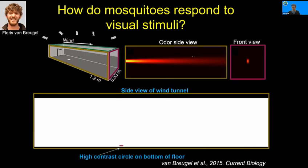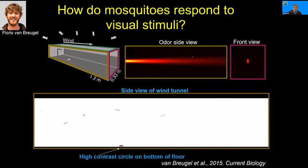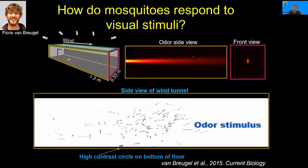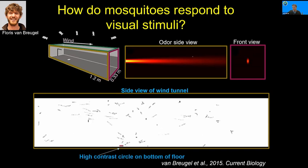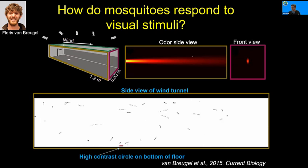This is work by Flores Van Bruegel, a former postdoc in the lab. We looked at the behavior of mosquitoes within the wind tunnel using a multi-camera real-time tracking system. Flores put a visual object on the floor of the tunnel and at a certain time point released CO2. When CO2 was released, all of a sudden the mosquitoes became very attracted to the visual target — they were not attracted to it beforehand. When the CO2 became available and they encountered it, they became very attracted. So CO2 appears to be gating their visual sensitization and visual attraction to these objects.